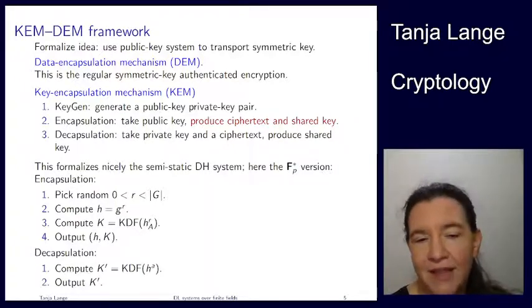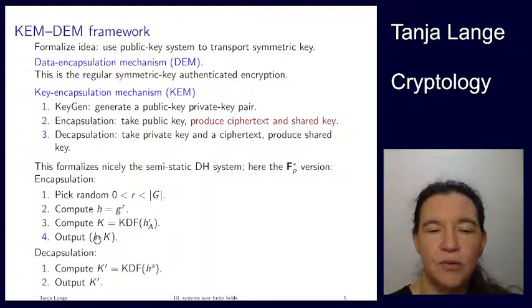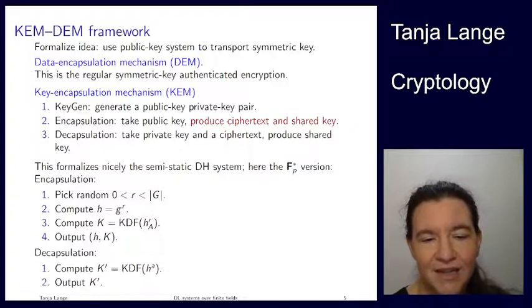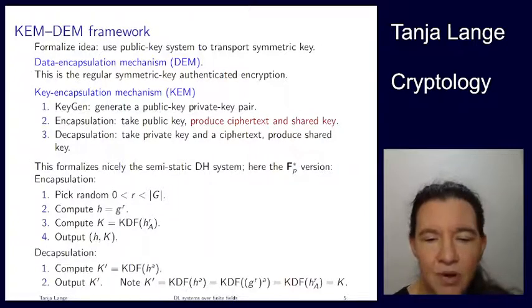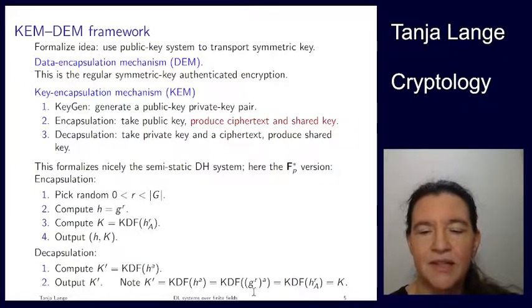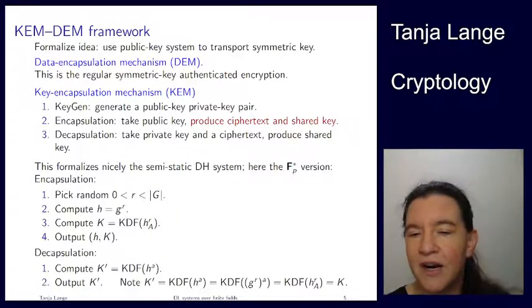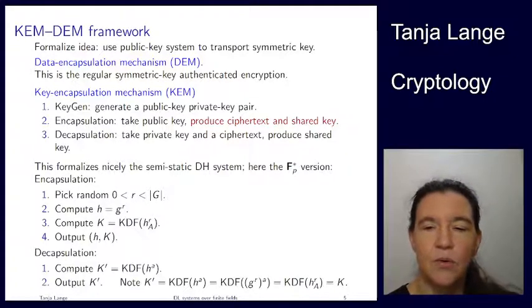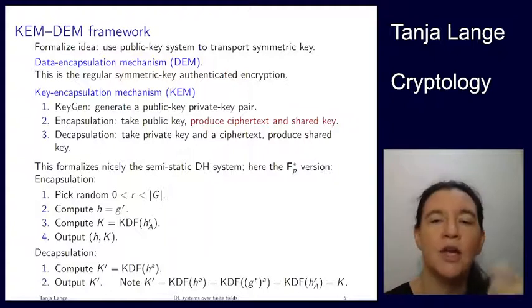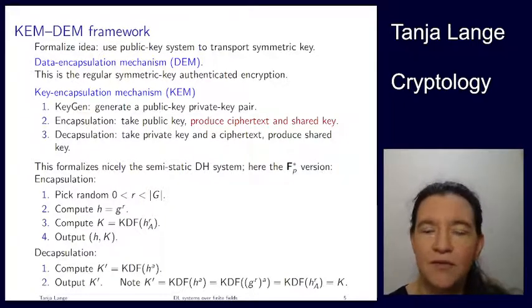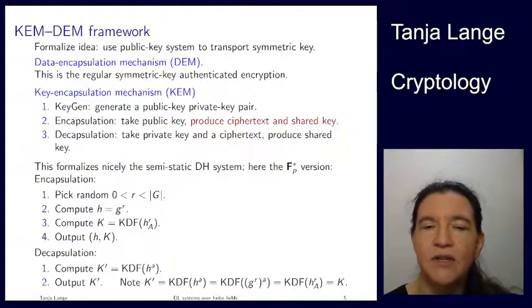Decapsulation is the inverse: it takes the private key a and the ciphertext h, raises h to the private key a, and runs the KDF on that to get K-prime. The claim is that K-prime matches K. Indeed, K-prime = KDF(h^a) = KDF((G^r)^a) = KDF(G^{ra}), which equals KDF(h_A^r) — exactly what was computed during encapsulation. This is the framing of semi-static Diffie-Hellman in the KEM-DEM framework: Alice's key is static, Bob's key is ephemeral per transmission, and you get a shared key out along with a ciphertext — what was previously called Bob's key share.